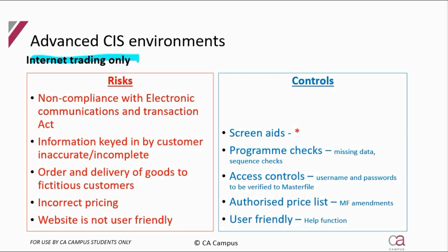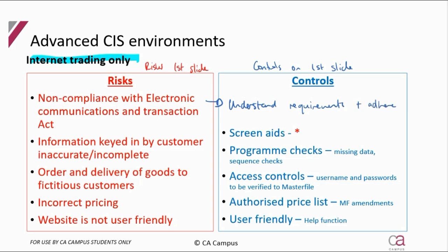For trading over the internet, all the risks and controls from the first slide are still relevant, but there are some additional risks and controls. An additional risk - always remember this, it's one easy mark - if they're trading over the internet, there is a risk of non-compliance with the Electronic Communications and Transaction Act. That's a standard mark; you don't have to know anything else, but if they're trading over the internet, there is an Electronic Communications and Transaction Act they have to comply with. The control is to understand the requirements and then adhere to them.